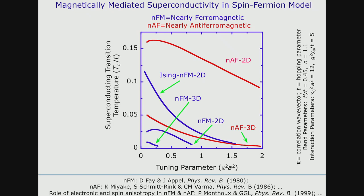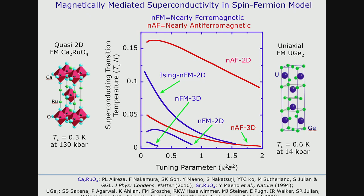Most examples involve the border of anti-ferromagnetism, but there are a few intriguing examples involving the border of ferromagnetism. I mention two cases: a quasi-two-dimensional ferromagnet, calcium ruthenate, and a highly anisotropic uniaxial material with uniaxial magnetic anisotropy, uranium germanium-2. There are a number of other examples in the same class that also exhibit this phenomenon.